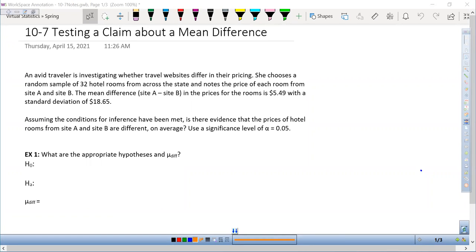Assuming the conditions for inference have been met, is there evidence that the prices of hotel rooms from site A and B are different on average? Use a significance level of alpha equals 0.05. They're telling us the conditions are met, so we're not going to check that, but we are going to write out the null and alternative hypothesis. With mean difference, we aren't identifying each mean separately, we're talking about them as a unit, as a mean themselves.